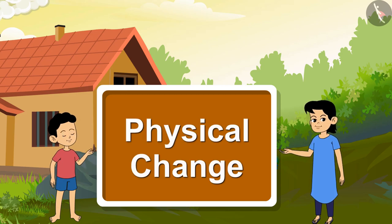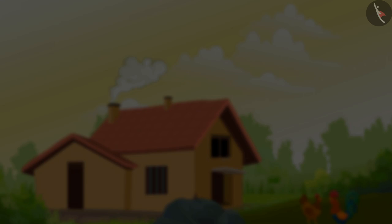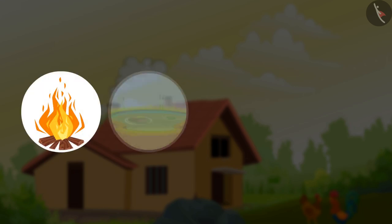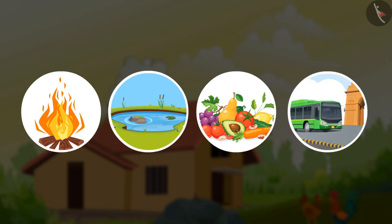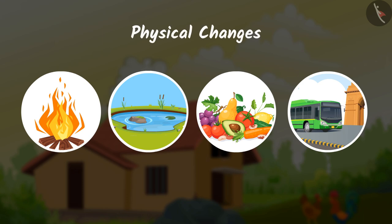Physical Change. Children, you know that there are three states of matter: solid, liquid and gas. Fire, water, fruits, vegetables, vehicles are all matter. Matter takes up space and is present everywhere. Matter goes through either physical or chemical changes. In this video, we will learn about physical changes.